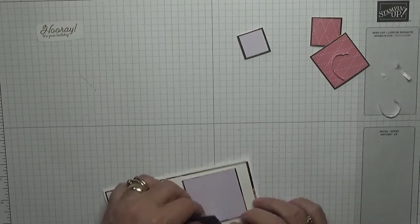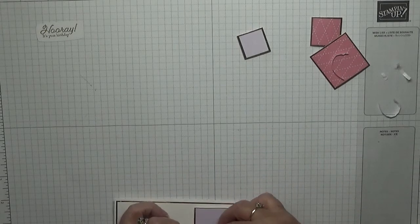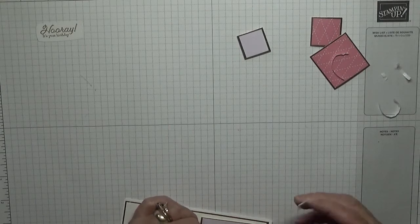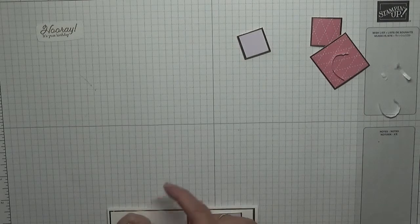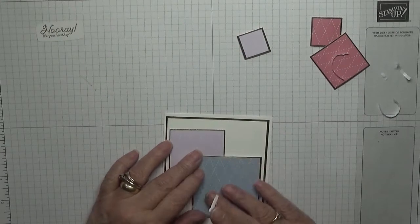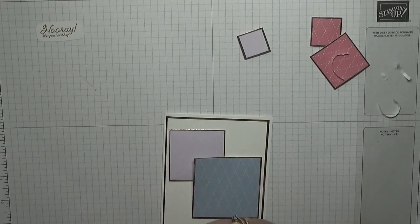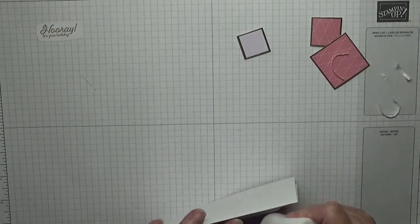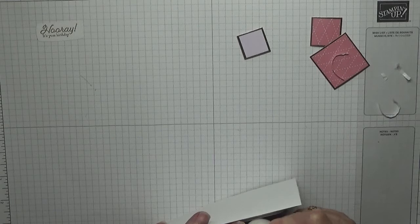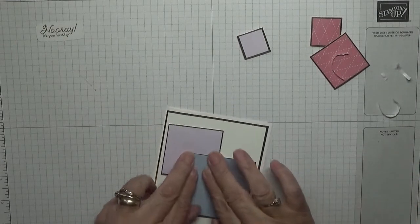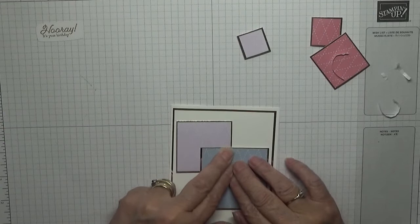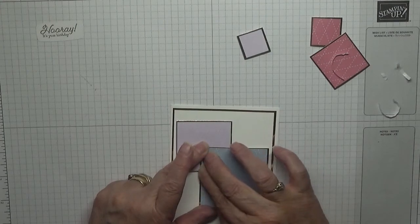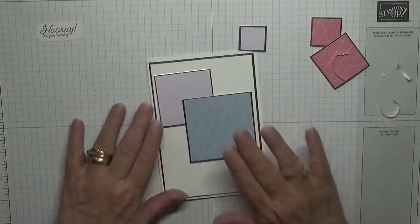This one there. This one needs that bit off and a bit of that. That's it. And then we'll glue this corner. Hold that down.